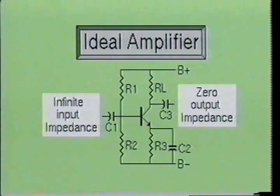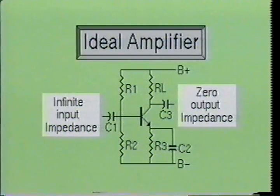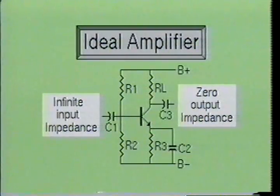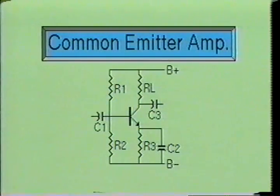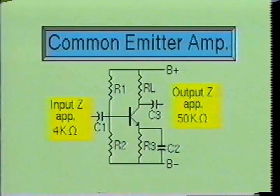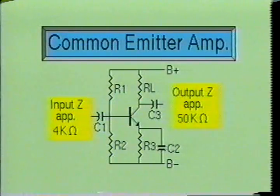The perfect amplifier should have an infinite input impedance with a zero output impedance. This would allow the stage to operate with no current drain from the previous stage, and at the same time have an unlimited ability to drive the next stage. Unfortunately, most small signal amplifiers use the common emitter configuration, which rates poorly in both of these parameters. The typical input impedance of the common emitter configuration will usually be around 3,000 to 4,000 ohms, while the output impedance will be fairly high, usually around 50,000 ohms.